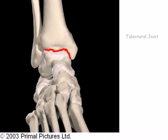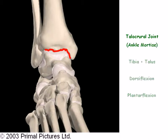The ankle foot complex also consists of three major articulations. The talocrural joint, also known as the ankle mortise, consists of the tibia and the talus. The motions of dorsiflexion and plantarflexion occur at this joint.